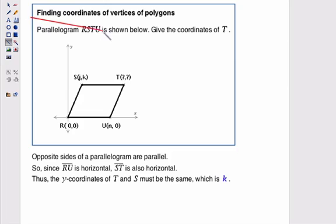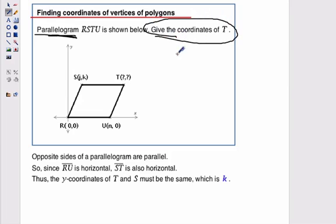Okay, here we're going to look at finding the coordinates of vertices of polygons. In this example we're given a parallelogram, that's important to make note of. Parallelogram RSTU, shown below. We want to give the coordinates of T.